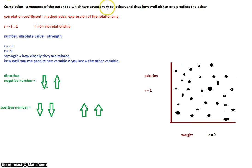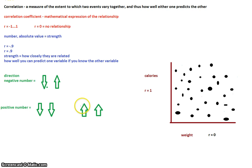So correlation tells you about relationship. The coefficient is going to tell you the strength — how easy it is to guess one based on the other — as well as whether it's a positive or negative direction. And the scatter plot is going to be a picture of that. In class, we will talk about causation and go over some more examples.